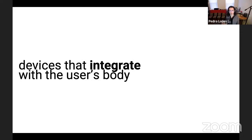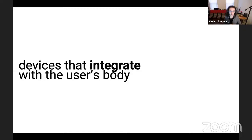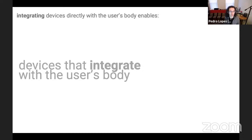Muscle Plotter was an interesting example of a device that integrates with the body, because it was hard to distinguish the boundary between what's the device's hardware and what's your hardware. In an HCI exam quiz, if I ask you what are the hardware components of Muscle Plotter, you'd have to say the user's muscles are part of the hardware — otherwise it can't plot. That's what I've been exploring in my lab for the last years.